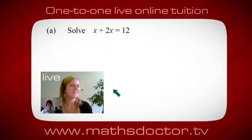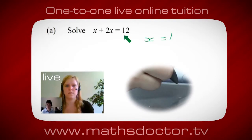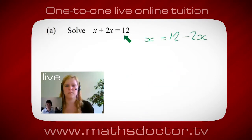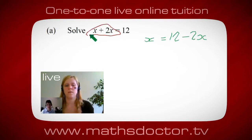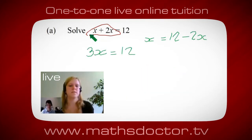Okay, so let's look at this one: solve x plus 2x equals 12. What do you think you do first? Well, I want x on its own, so I'd put x equals 12 minus 2x. A lot of the time we want to get x by itself, but first we want to get all the x's together. Can you see what we can do? It's 3x, isn't it? So 3x equals 12, and therefore x equals 4. Brilliant, spot on, well done.